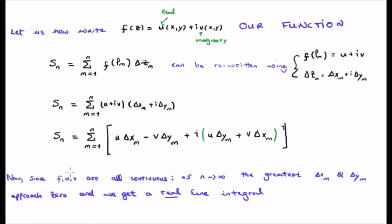Now, since f, u, and v are all continuous, as n approaches infinity, or we get more and more points on the closed curve C, the greatest delta x sub m and delta y sub m will approach zero, and we will get the real line integral.